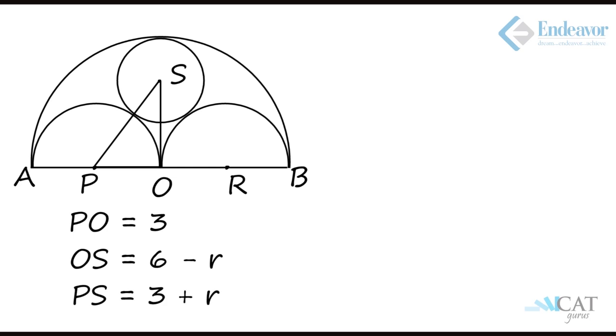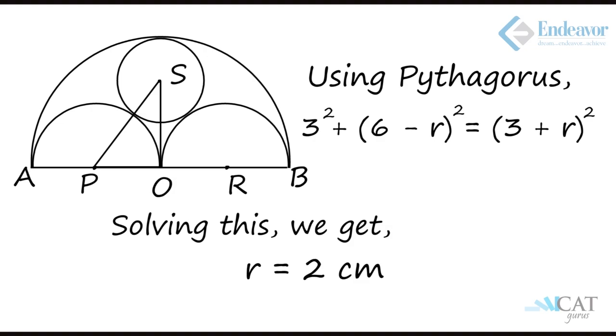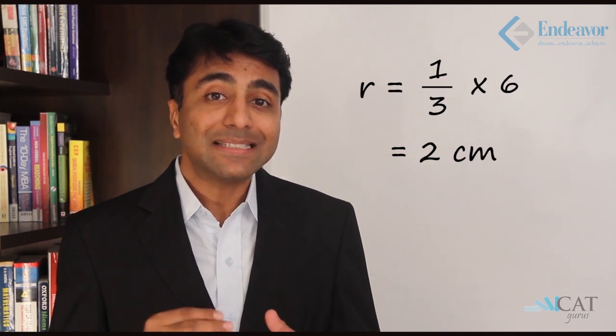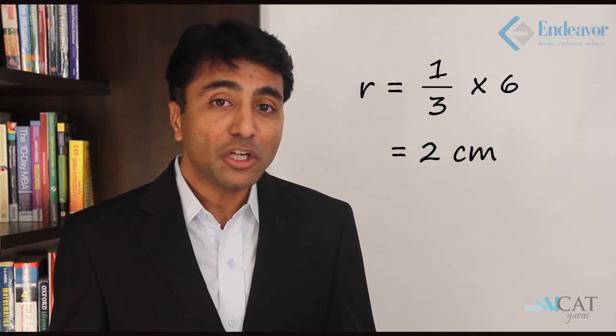Solving by Pythagoras theorem: 3 squared plus (6 minus R) squared equals (3 plus R) squared. Solving this gives R equals 2. We also have a direct property: in such a situation the radius of the smaller circle is always one-third of the radius of the bigger circle. So the radius is one-third of 6, which is 2. This could have been calculated in less than 30 seconds.